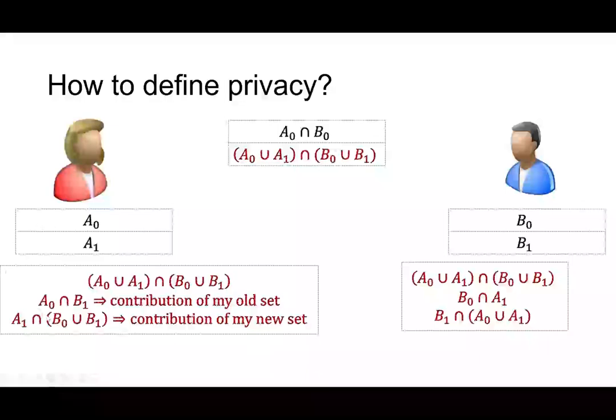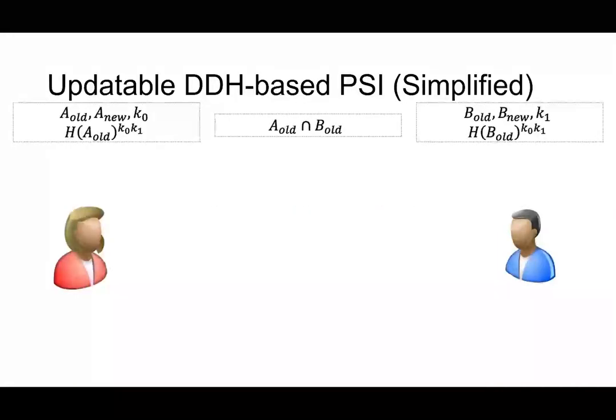So Alice will additionally know A0 intersection with B1, that's a contribution of her old set, and she will also know A1 intersection with B because it's a contribution of her new set. And similarly for Bob. So based on this observation, we can have the construction. So let's assume Alice got key K0, and Bob got K1, that's DDH key.